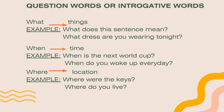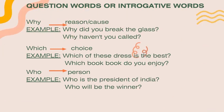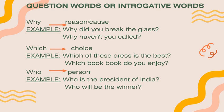Number four: 'why' — when you ask about any reason or cause. For example: 'Why did you break the glass?' or 'Why haven't you called?' Number five: 'which' — when you ask about any choice. For example: 'Which of these dresses is the best?'